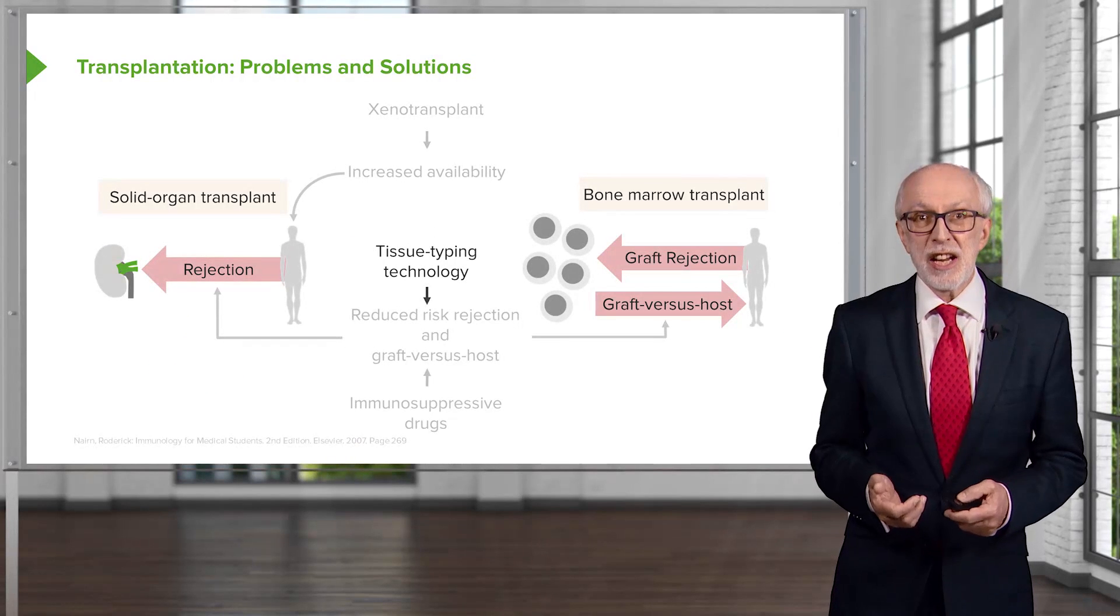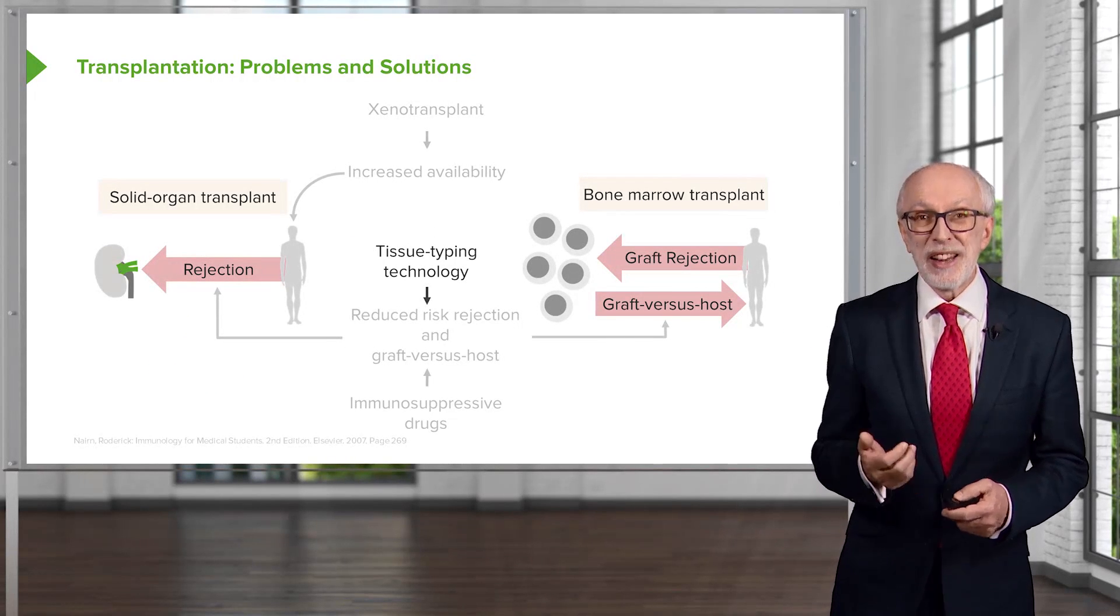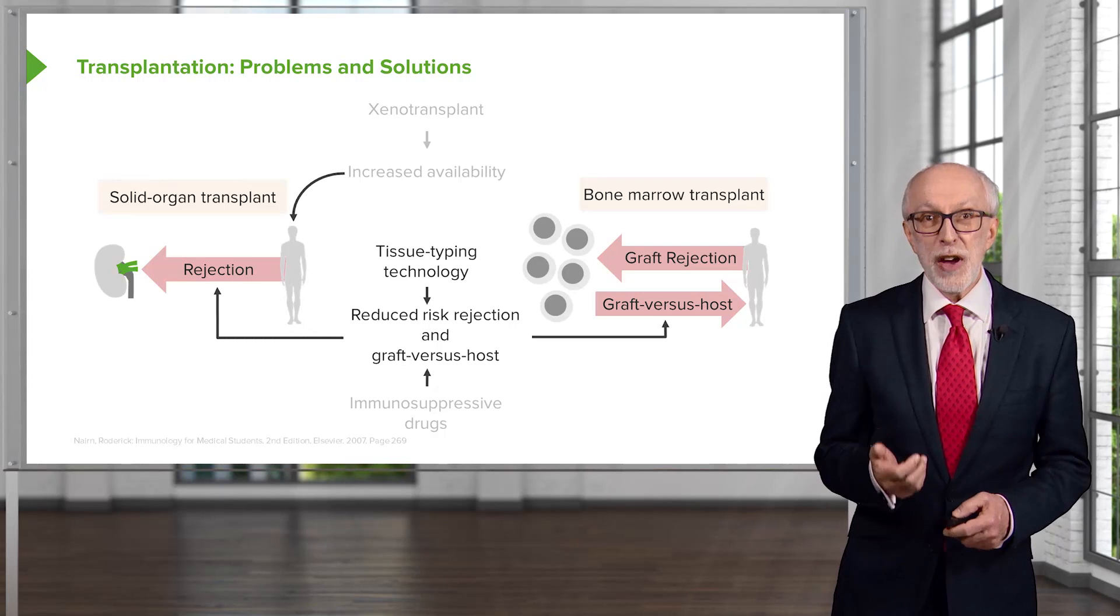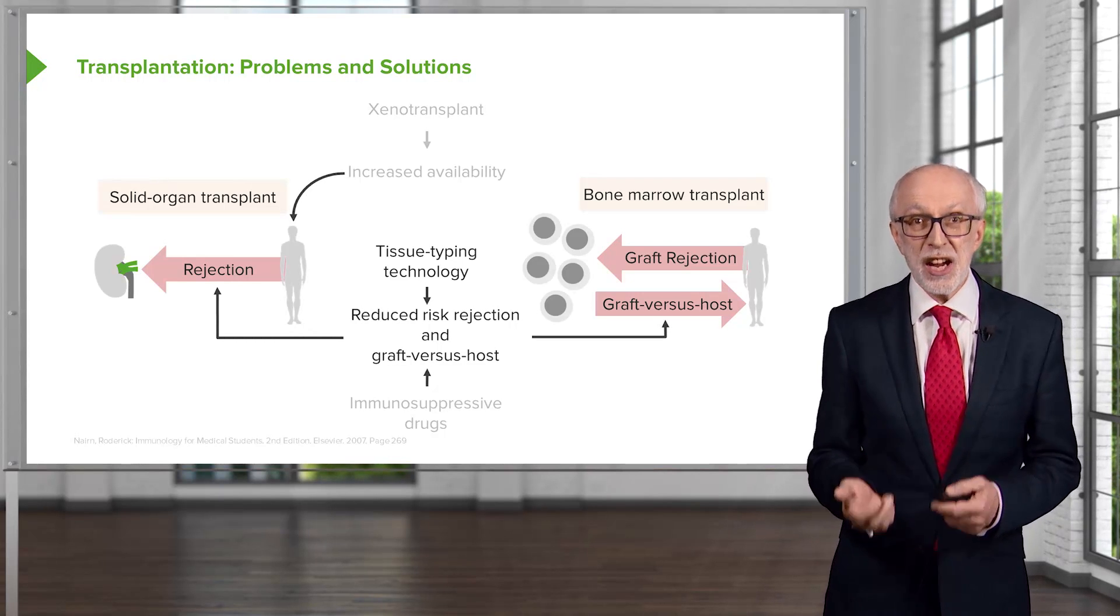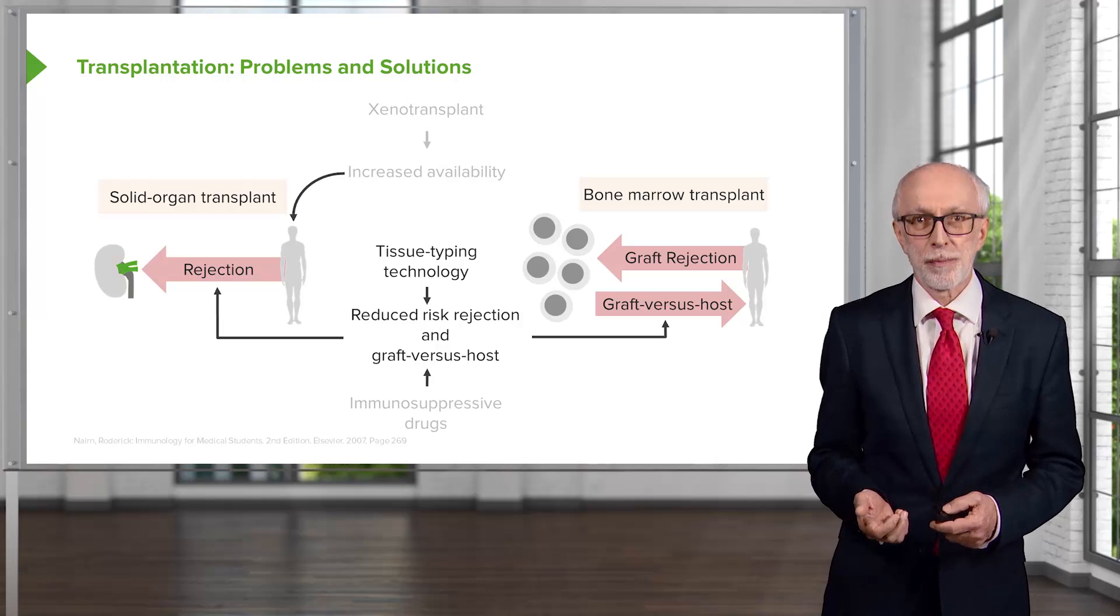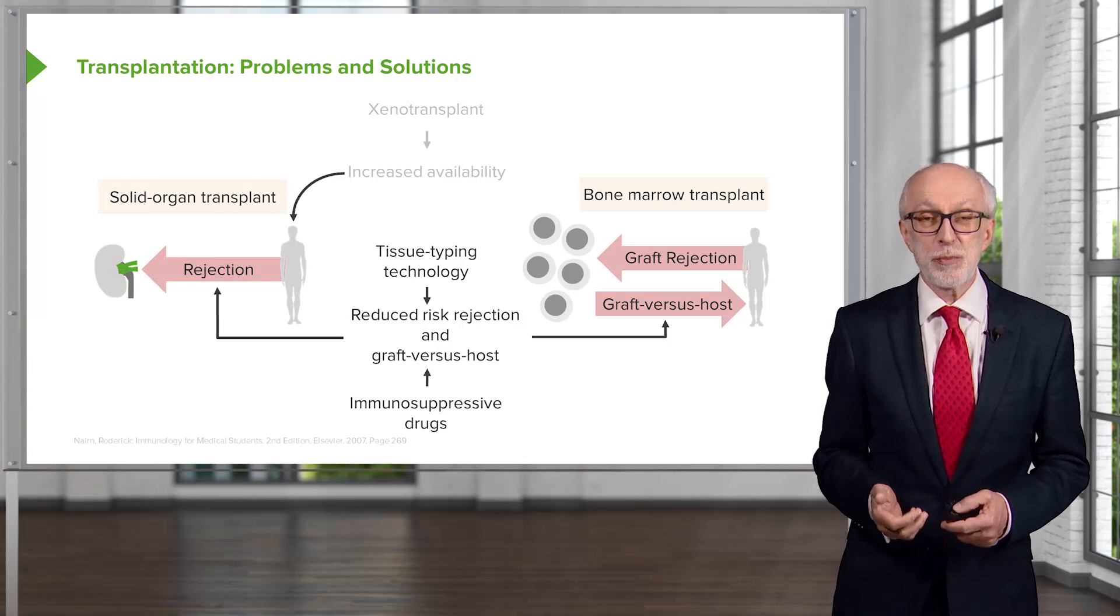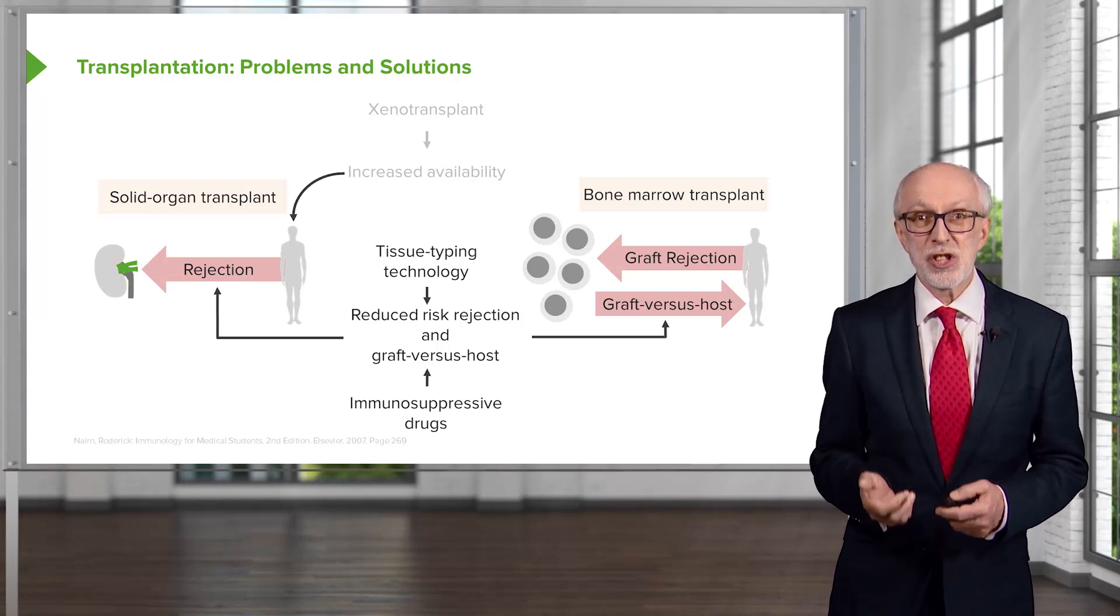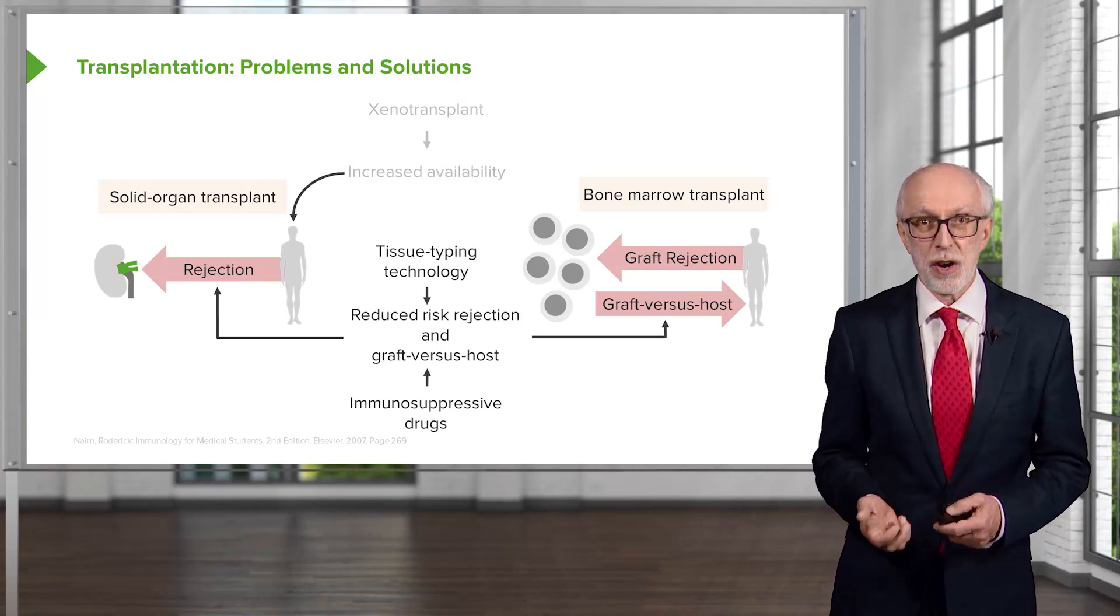Tissue typing technology will allow the matching of the donor and the recipient with a reduced risk of rejection and of graft versus host reactions. Immunosuppressive drugs can dampen down the recipient's immune response against the foreign graft.